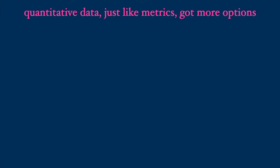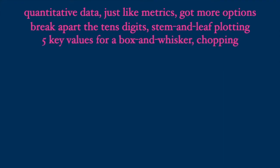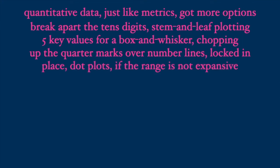Quantitative data just like metrics got more options. Break apart the 10-digit stem and leaf plot it. Five key values for a box and whisker choppin up the quarter marks over number lines locked in place, dot plots if the range is not expansive.